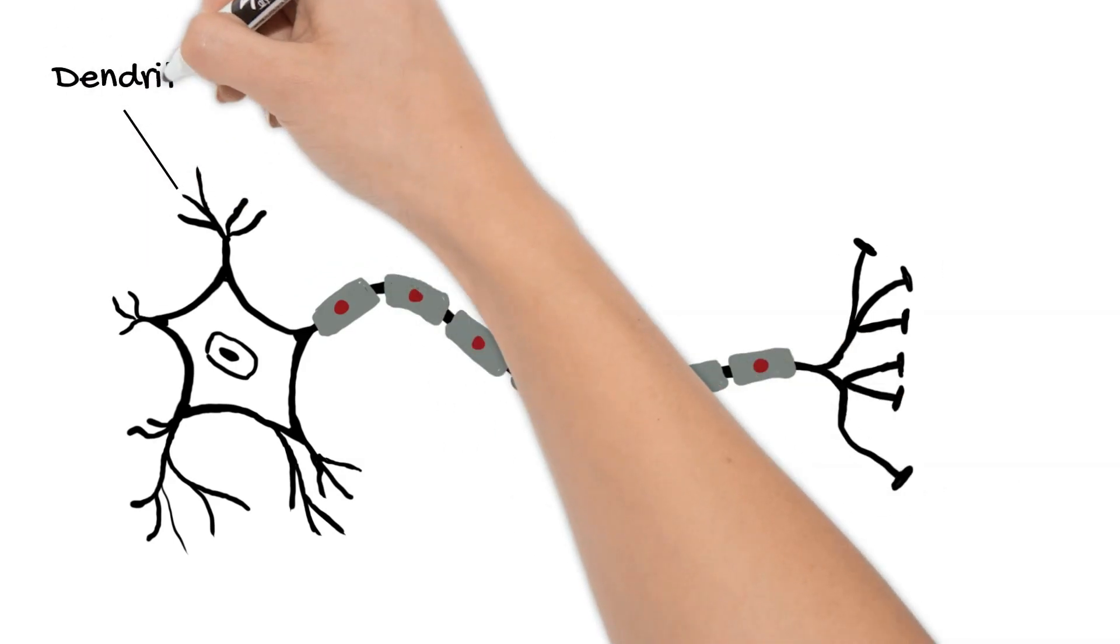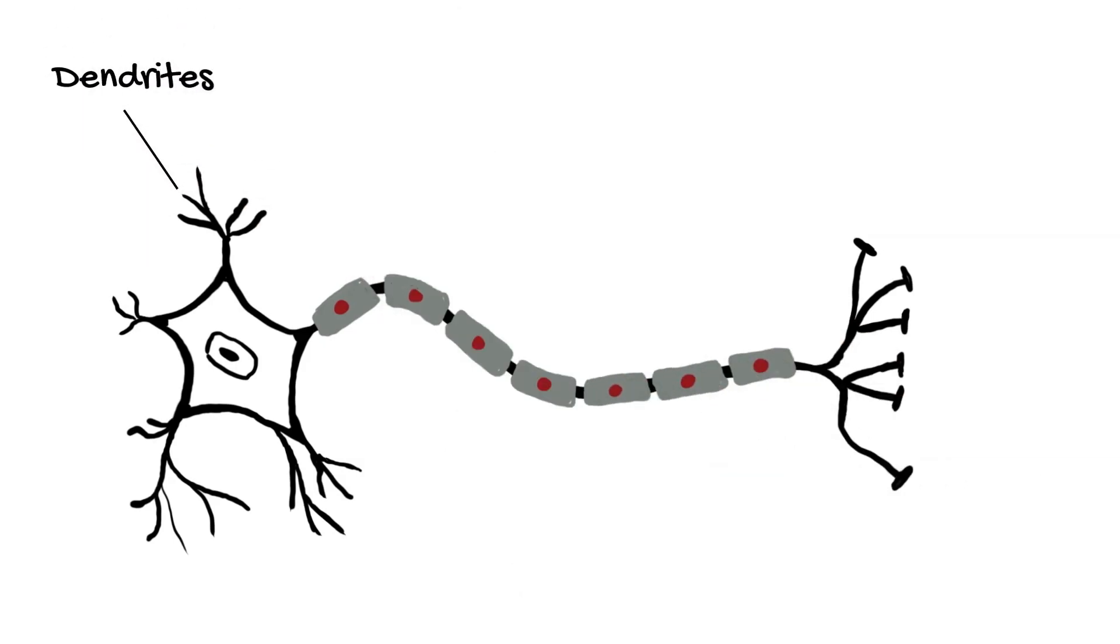These tree-like structures are called dendrites. They receive signals from other neurons and can receive input from anywhere up to 10,000 other neurons.